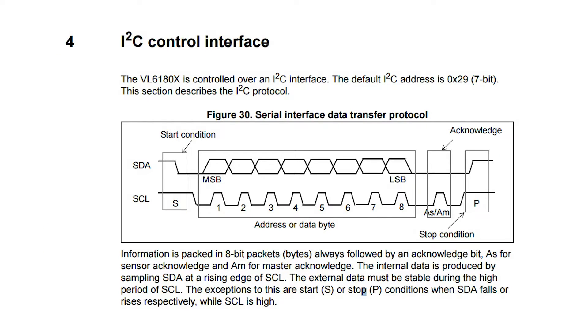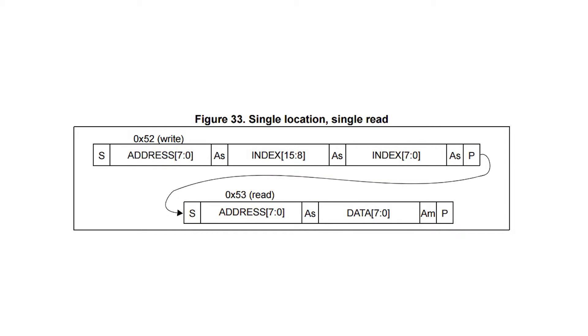Then, we need to understand the information that must be exchanged with the sensors. The I2C address of the VL6080X is 29. We will perform a single location, single read. We simply need to send a write to the slave with the index, the address of the register, 0 in our case. Perform a stop condition and then perform a read to get the data.